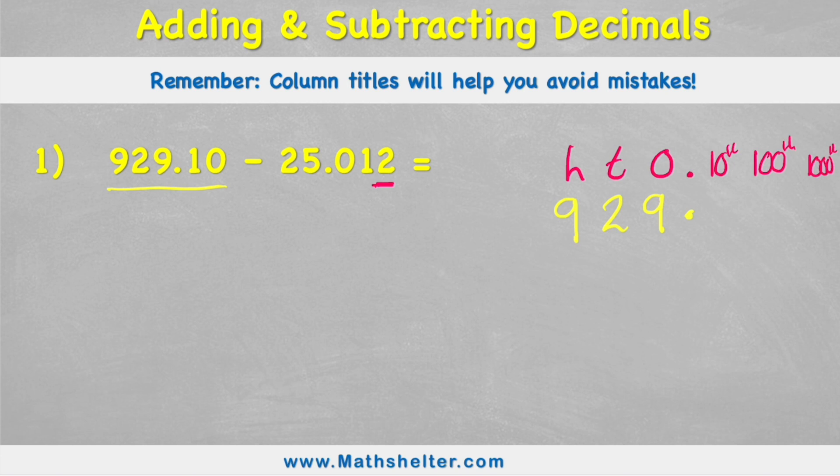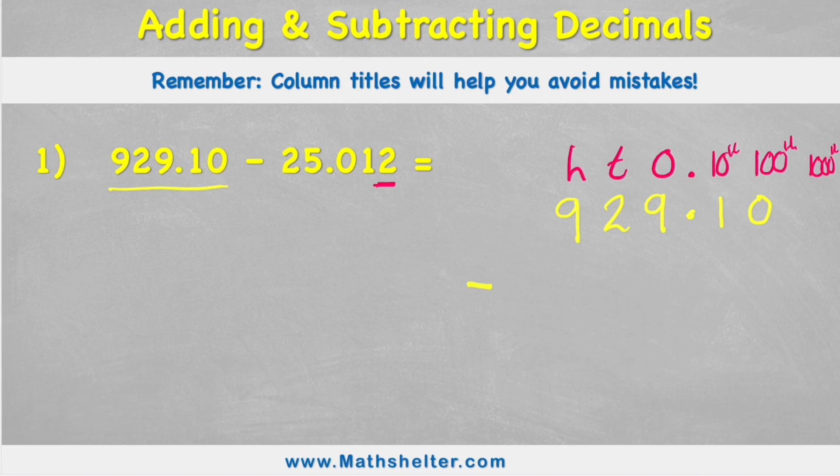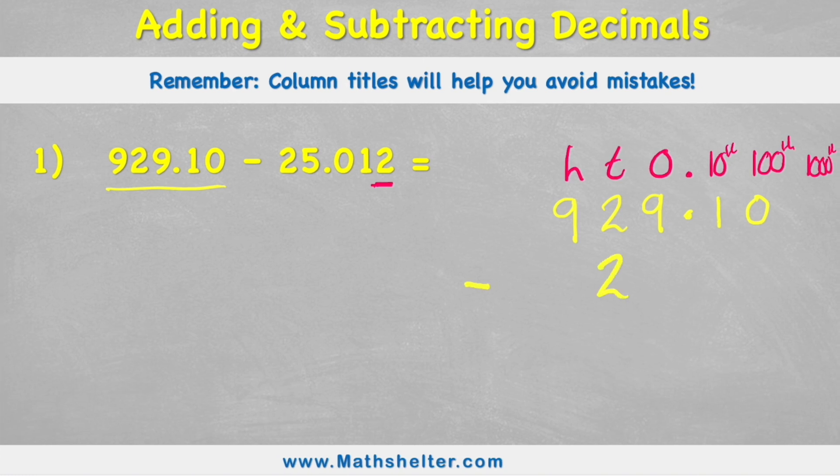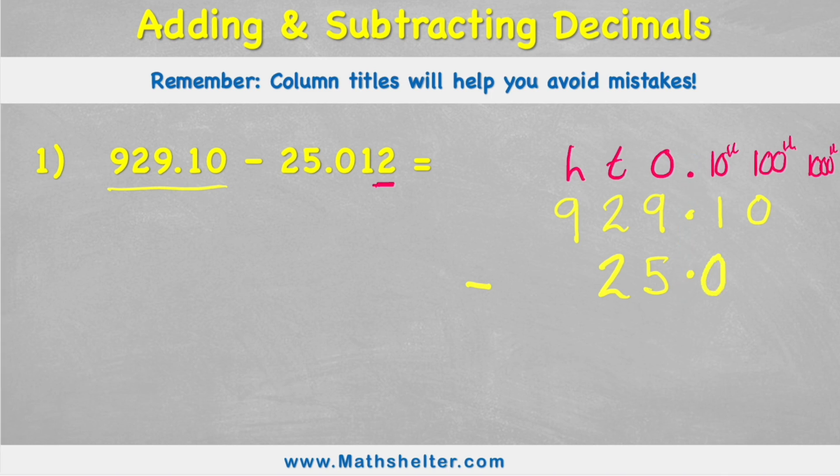And I'm subtracting 25, which would be two tens, five ones, put my decimal back, and again we can see my decimals are all in line, so I've not made a mistake there. Zero tenths, one hundredth, and two thousandths. Now put my equals line.